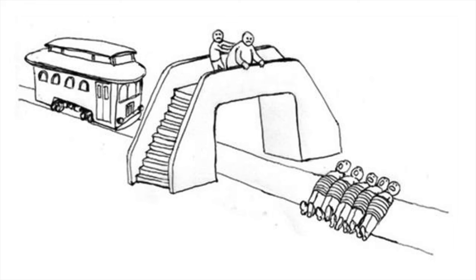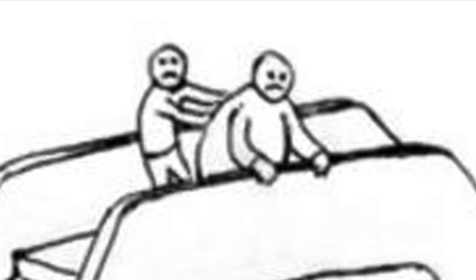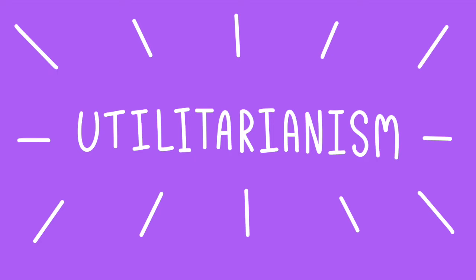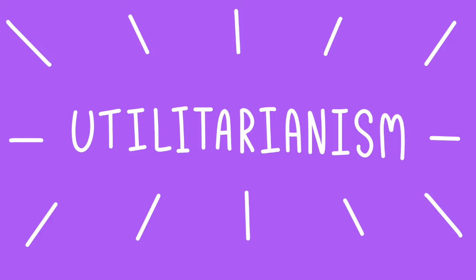Another dilemma given to counter the trolley problem is the fat man problem. Same thing here with the trolley heading towards five people, but you can stop the trolley by pushing a fat man in front of it, which will save the five others. There's a much more personal involvement, making the decision much more thoughtful in my opinion. Regardless, ethical dilemmas like these often highlight a certain ethical philosophy, that of utilitarianism.